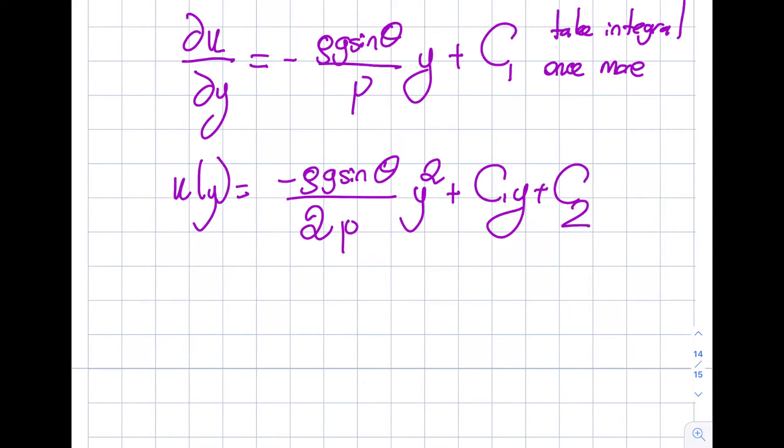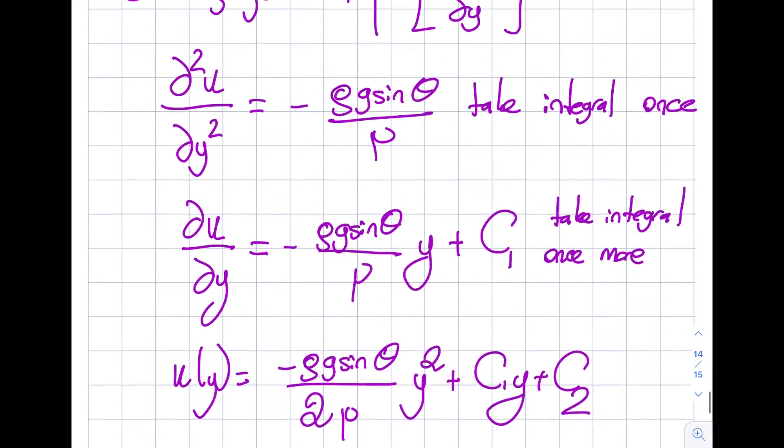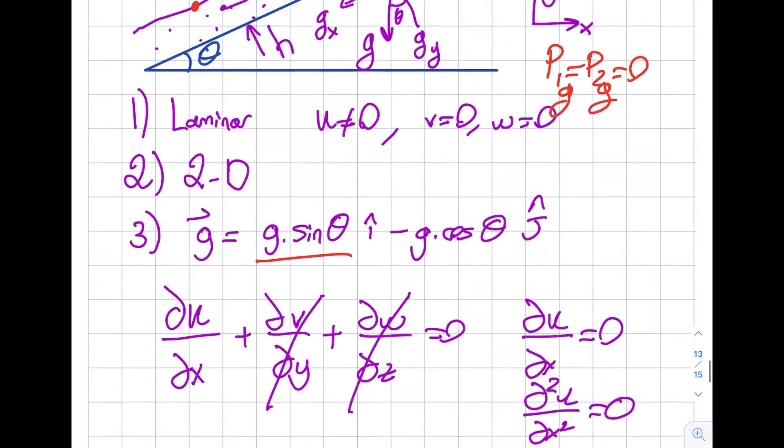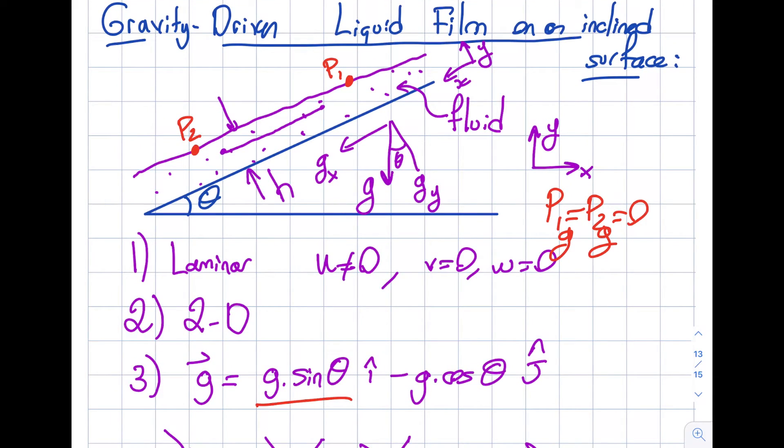Let's look at the boundary conditions, and this is where I will see issues if I were to ask this question in the exam. Everybody will be able to get this: at y equals 0, u is equal to 0. No slip condition. It's sticking to the surface. This is an inclined surface, so u is equal to 0 at y equals 0. I got that.